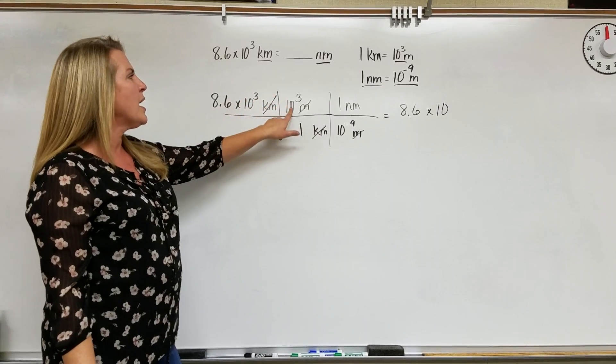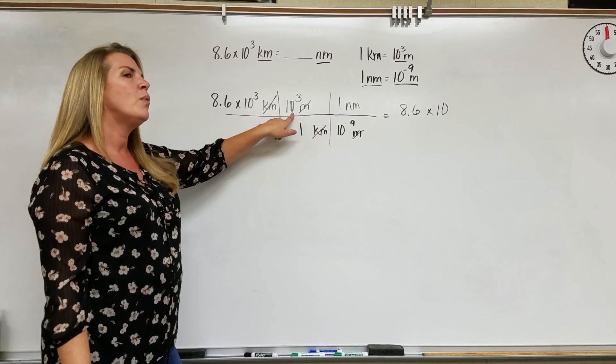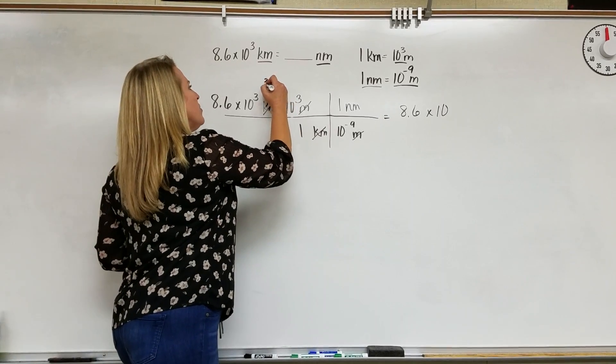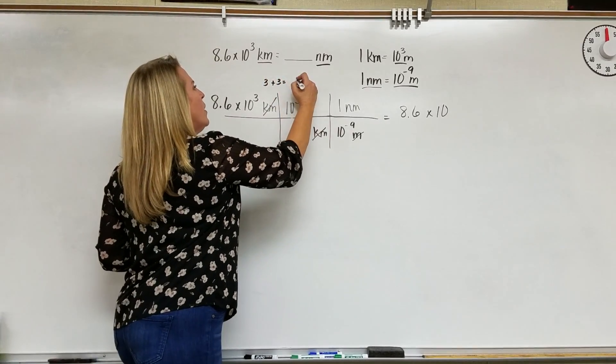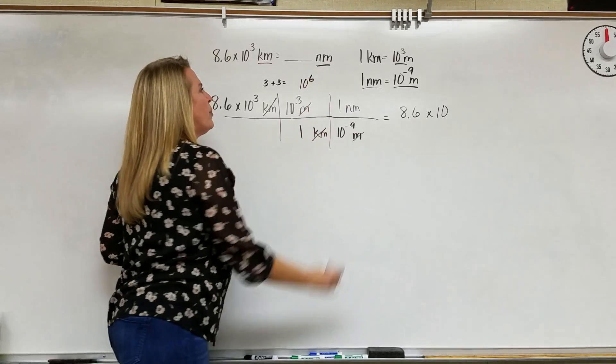10 to the third times 10 to the third. When we multiply exponents, we add them. So that's going to be 3 plus 3, or 10 to the sixth power.